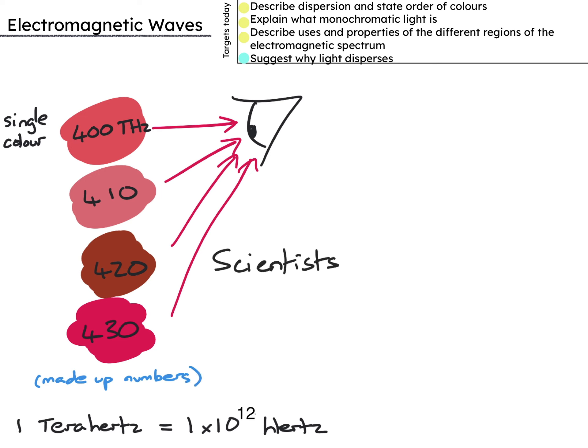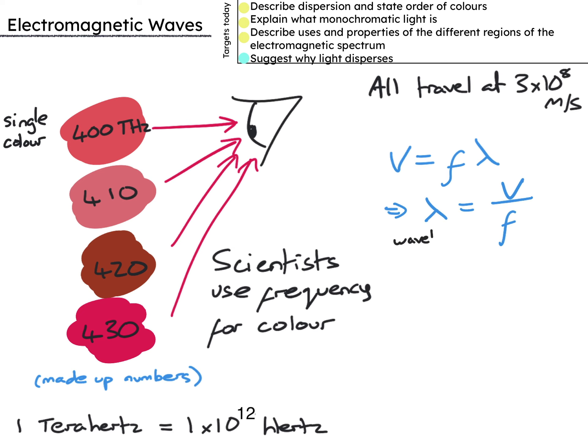All electromagnetic waves travel at the same speed in a vacuum, 3 times 10 to the 8 meters per second. So using v equals f lambda, speed is frequency times wavelength, I can calculate the wavelengths for each of these. Now remember though that in glass or water the frequency would be the same but the wavelength changes and this is why frequency is a better descriptor.